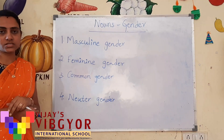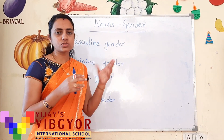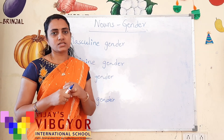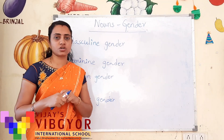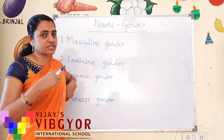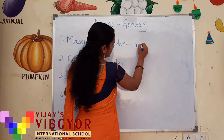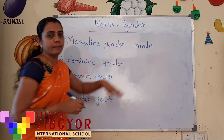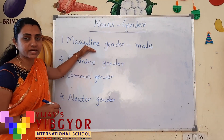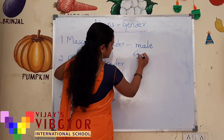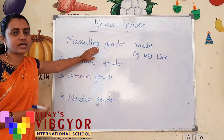Coming to the first one — masculine gender. What do we mean by masculine gender? We come across many nouns. In those nouns, some represent males, some represent females, some represent both in common, and some do not represent any gender at all. Masculine gender indicates males — male organisms or male candidates. For example: boy, lion, and so on.